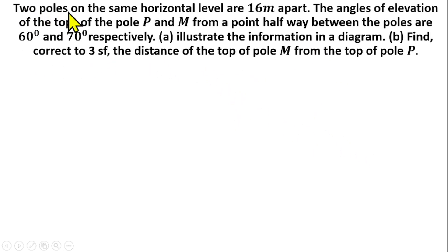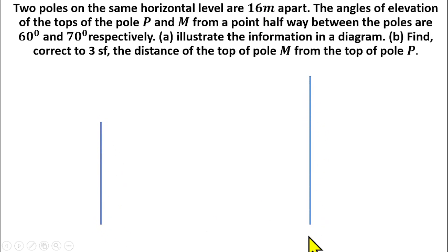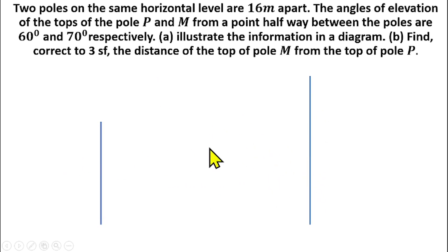We are told that the two poles on the same horizontal level are 16 meters apart. There are two vertical poles — we don't know whether they are of the same length since we are not told. If I draw a straight line to represent the first pole, I can also draw another straight line to represent the second pole. You can see that one is longer than the other.